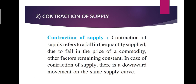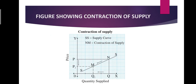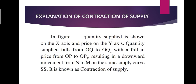The second point we covered is contraction of supply, where we showed that due to a fall in price, supply also falls. The condition remains the same — other things remain constant. If price falls, then due to contraction, the movement on the same supply curve becomes downward. The NM movement is downward on the SS supply curve, which shows contraction of supply.